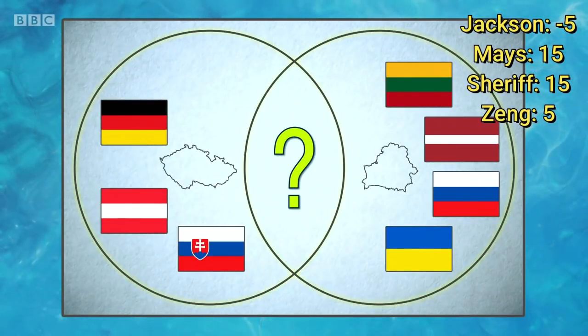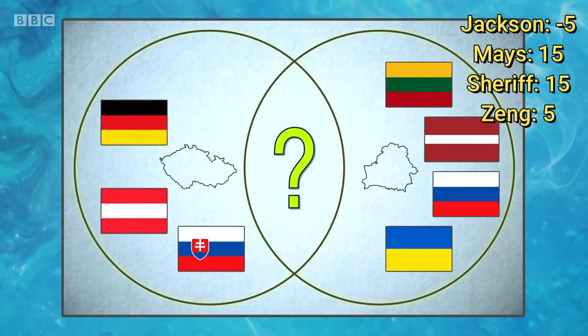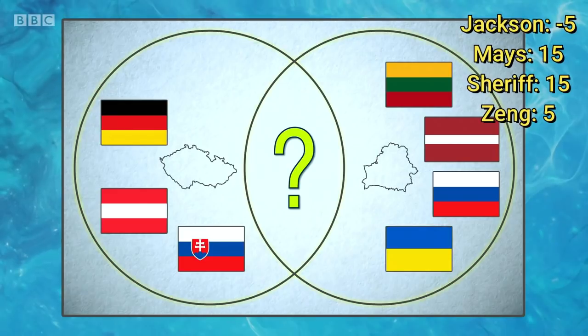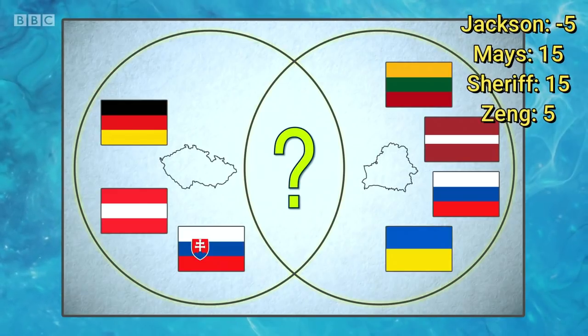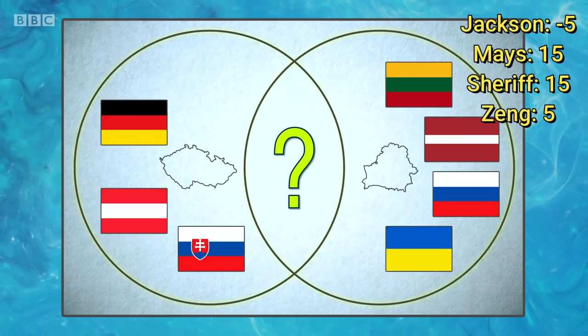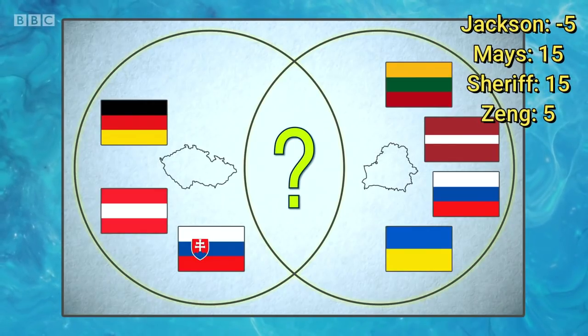For your picture starter, you're going to see a Venn diagram representing the land borders of two countries. The countries themselves are shown in outline and their neighbours are represented by flags. The two countries have one neighbour in common. Name that connecting country. Poland. Poland is correct.